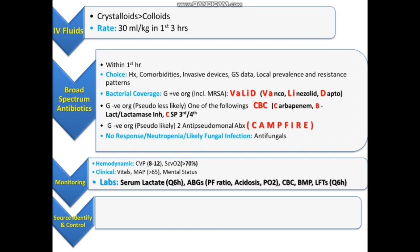We also need to monitor arterial blood gases, ABGs. Three things we look at: first, the P/F ratio — partial pressure of oxygen over fraction of inspired oxygen (FiO2) — to see whether the patient has developed ARDS, which can be related to fluid overload.